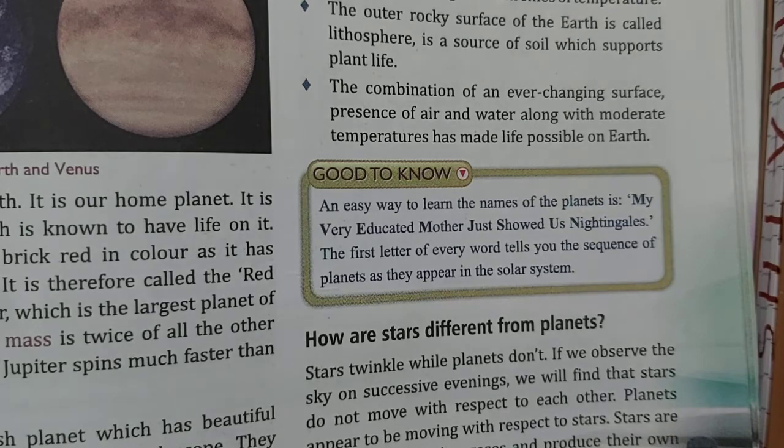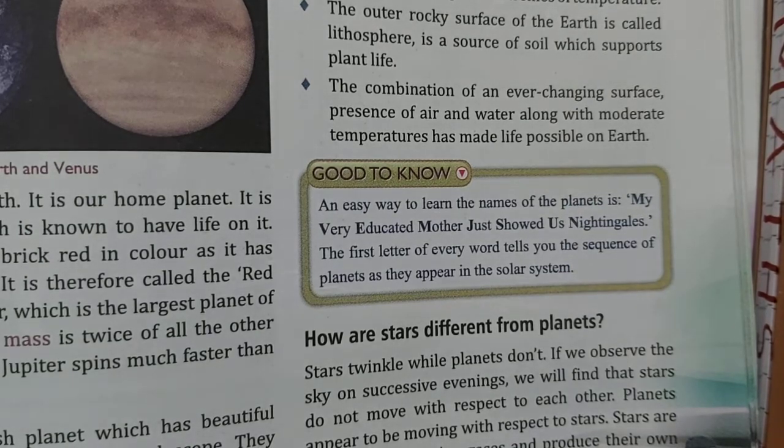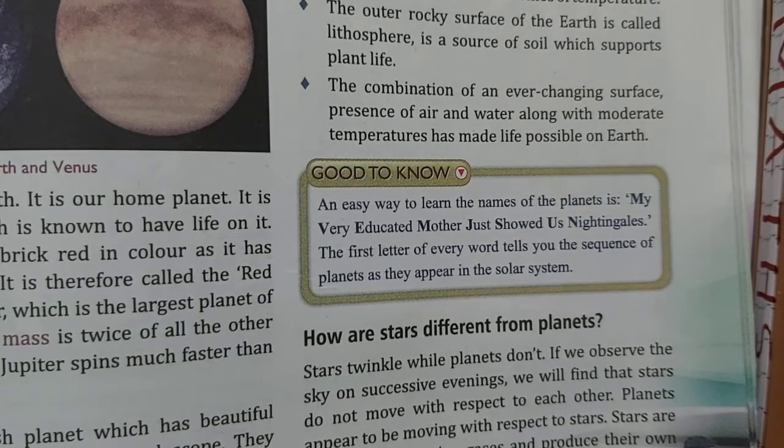The Milky Way is estimated to have around 100 to 400 billion stars. You can imagine — 100 to 400 billion stars!